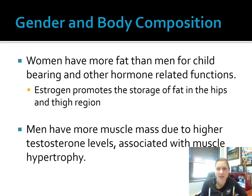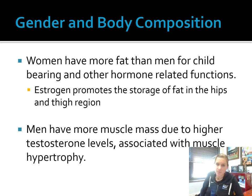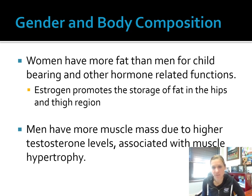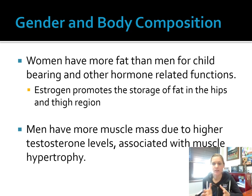As it relates to sex and body composition, women are going to have more fat than men for childbearing purposes, and this is also related to some of our hormonal differences. The two female hormones are estrogen and progesterone, and those two hormones are needed in oscillating levels in order for females to maintain a normal menstrual cycle. What is a normal amount of estrogen or progesterone for a female can vary substantially from person to person.